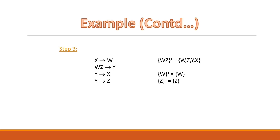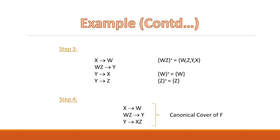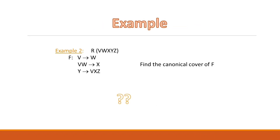In step four we can use the union rule if applicable. Among the four resultant FDs, the last two — Y to X and Y to Z — share the same left-hand side, so we apply the union rule. The final set of FDs is: X to W, WZ to Y, and Y to XZ. This is the canonical cover of F.